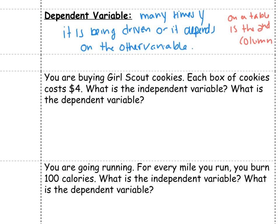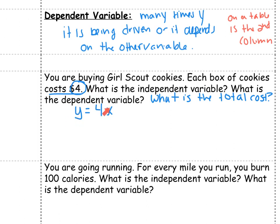Here's our first word problem. You're buying Girl Scout cookies — because who doesn't like a good cookie — and each box costs four dollars. What is the independent variable? What is the dependent variable? So what is the total cost? The total cost depends on how many cookies you buy. So if we had the equation, you would write: total cost equals four times the amount we bought. The cost depends on how many boxes we buy.